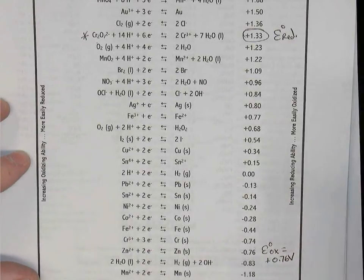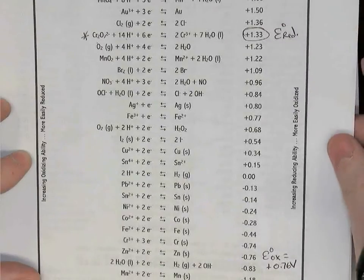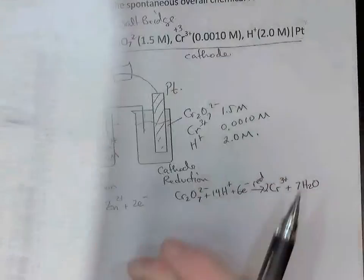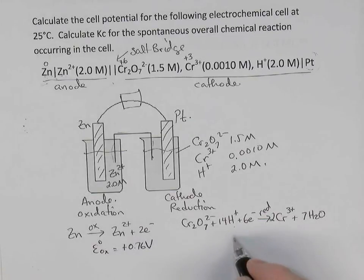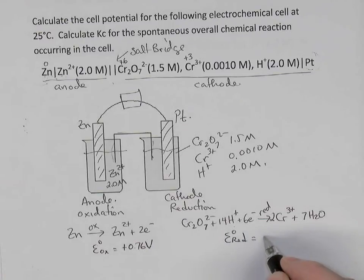So let's write those two potentials, reduction and oxidation, beside our two reactions. So for the zinc reaction, the oxidation potential was positive 0.76 volts. And the dichromate reaction, its reduction potential is positive 1.33 volts.